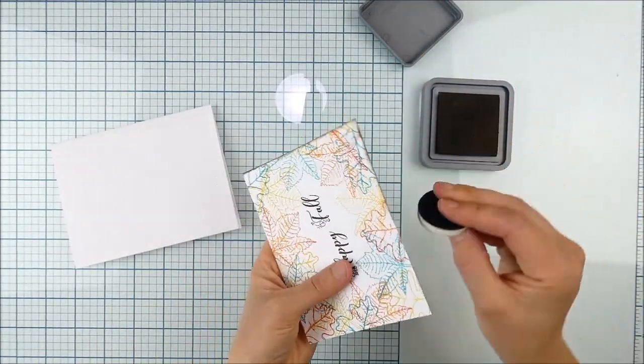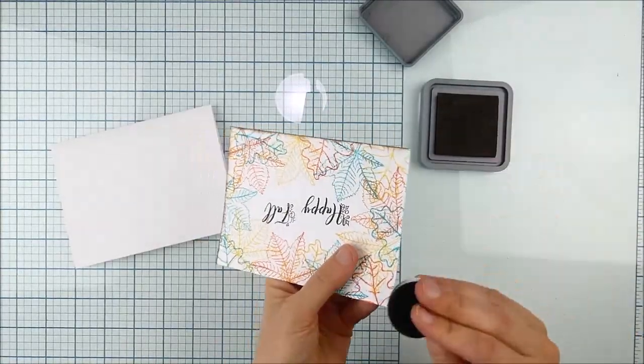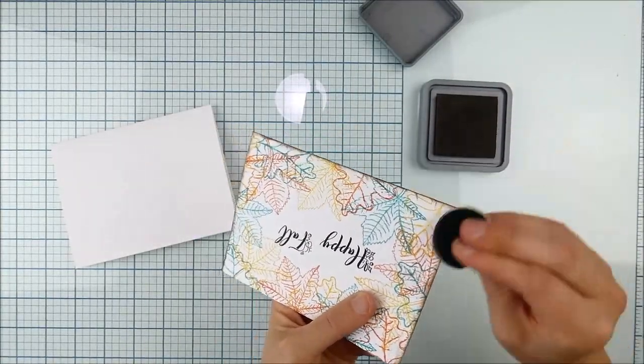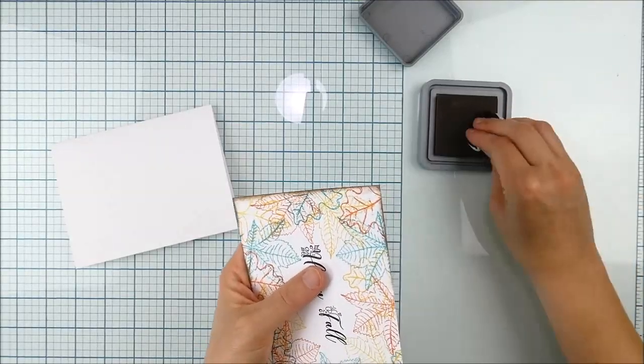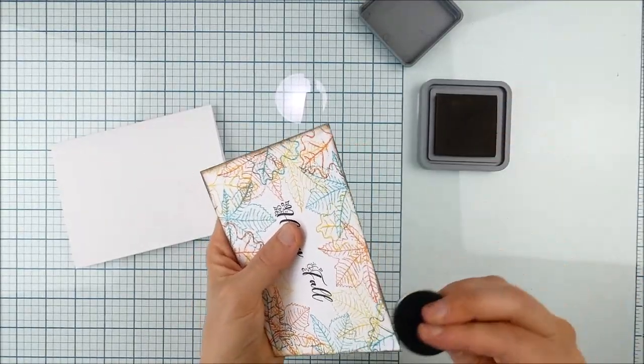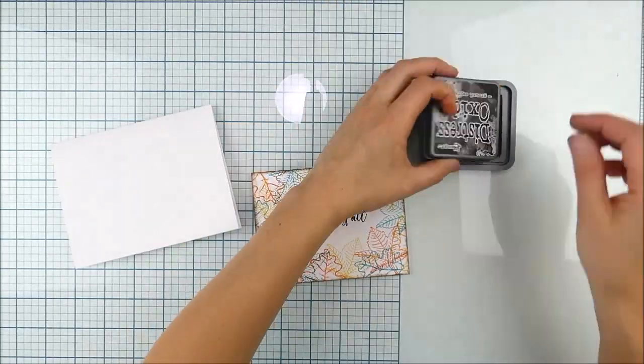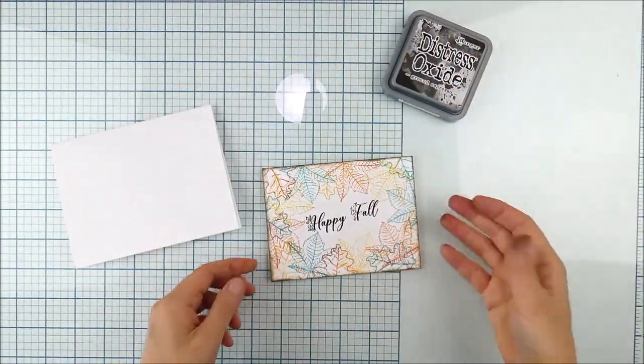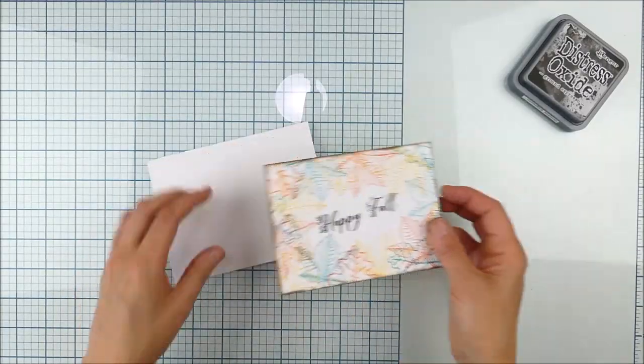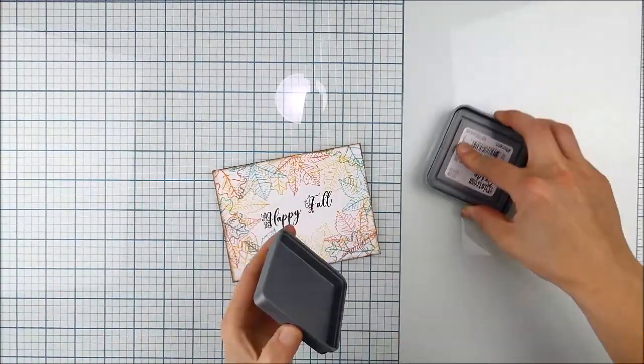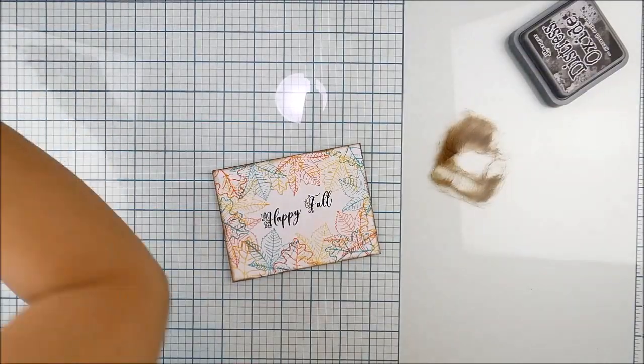So I pulled out some ground espresso distress oxide ink and I'm just using a foam blender. I didn't want to waste time to look for a handle and I had some spare blenders. You could do it on a handle, you could use a blending brush. I just want to add a little pop of color around the edge. And then as you keep going you look at it and think, okay, it feels like it needs something else still. So I decided to add some splatters with that ground espresso ink again.